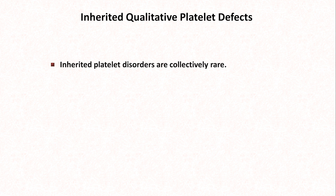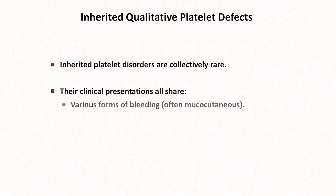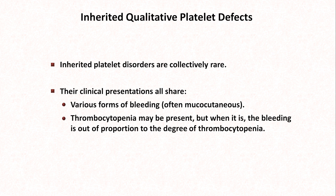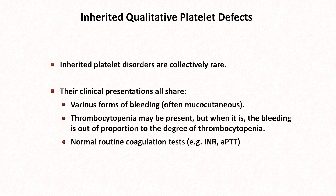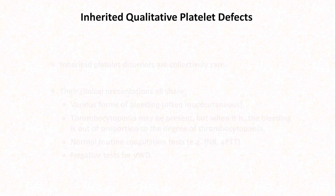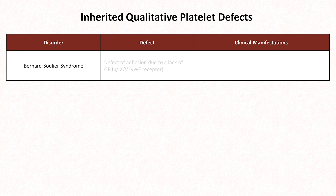Moving on to the inherited platelet disorders: as already mentioned, these are collectively rare. Their clinical presentations all share various forms of bleeding, which is often mucocutaneous — such as bleeding from the gums with toothbrushing and seemingly spontaneous epistaxis. Thrombocytopenia may be present, but when it is, the bleeding is out of proportion to the degree of thrombocytopenia. Routine coagulation tests are normal, and tests for von Willebrand disease are negative. Bernard-Soulier syndrome is due to a defect of platelet adhesion from a lack of the GP1B95 complex, also known as the von Willebrand factor receptor. One of its distinguishing features is giant platelets on a blood smear.